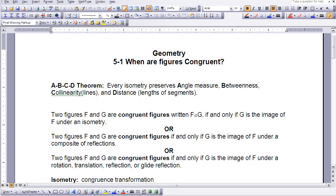Let's take a look at the first one. Two figures, F and G, are congruent figures written F is congruent to G, if and only if G is the image of F under an isometry. So meaning if we took F and we reflected it, we rotated it, translated it, or performed a glide reflection, they would be congruent figures.